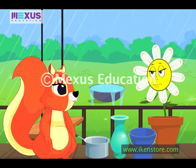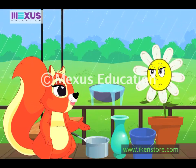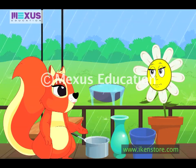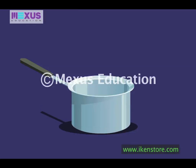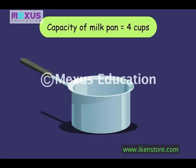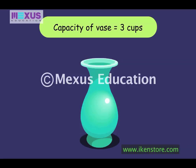Now tell me Amber, how many cups does each of the vessels hold? The milk pan holds 4 cups. The bucket holds 12 cups. And the vase holds 3 cups. That means the milk pan has a capacity of 4 cups, the bucket has a capacity of 12 cups, and the vase has a capacity of 3 cups.